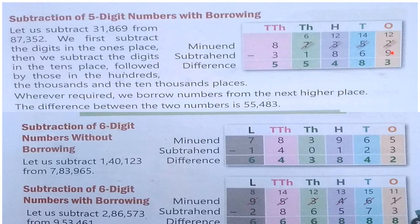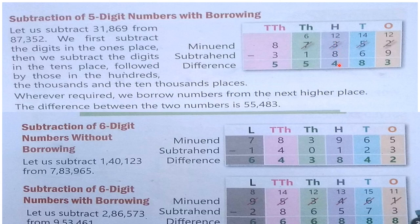For example, 2 minus 9 we cannot do, so we have to borrow 1 from 5 — now it is 12, and 12 minus 9 is 3. Next, 4 minus 6 we cannot do, so we borrow again — 14 minus 6 is 8. Then 2 minus 8 we cannot do, so borrowing from 6 gives 12 — 12 minus 8 is 4. Now 6 minus 1 is 5 since the minuend is greater, and 8 minus 3 is 5.